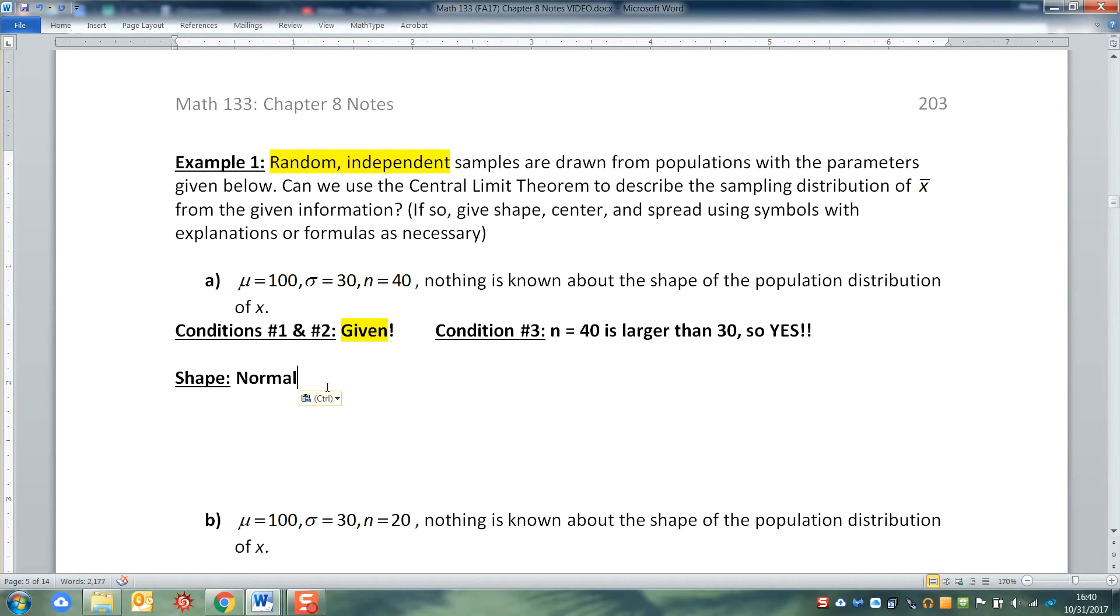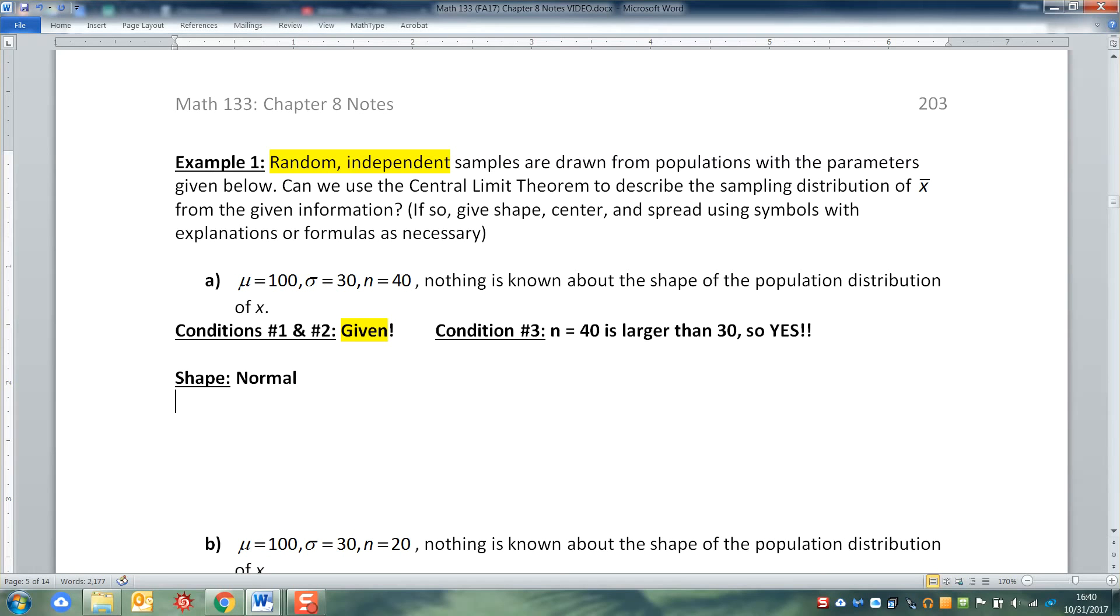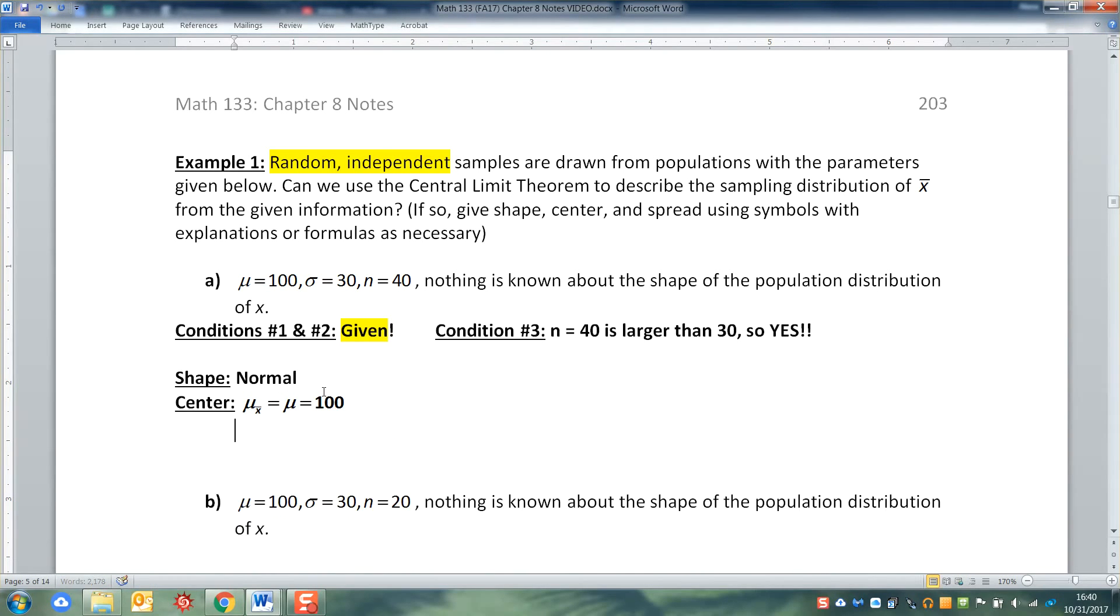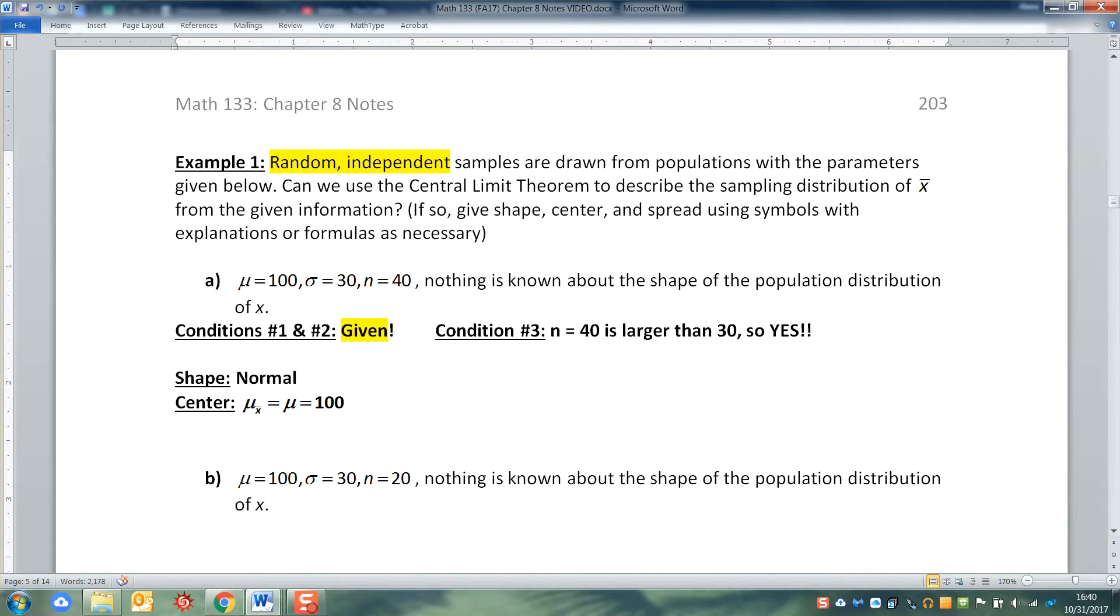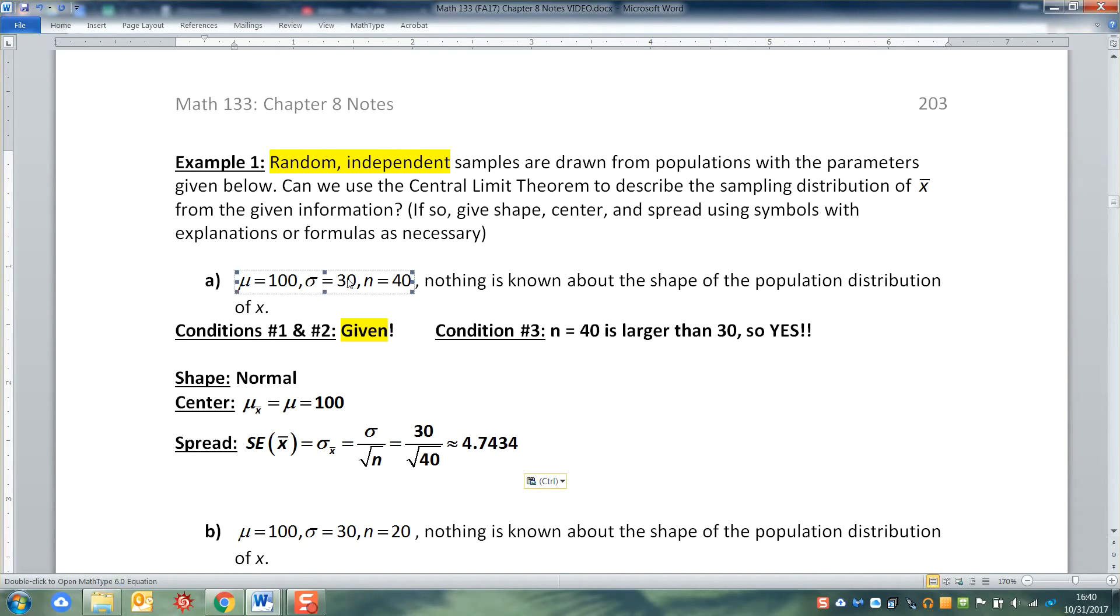That's the outcome of the Central Limit Theorem. So the shape is normal. The center will be the mean of your x bars, which would be the mean of your population, which is 100. The centers don't change. And then what does change is your spread. Your standard error becomes σ divided by the square root of n. So that's 30 divided by the square root of 40.